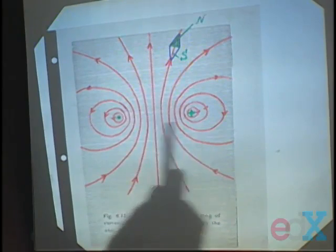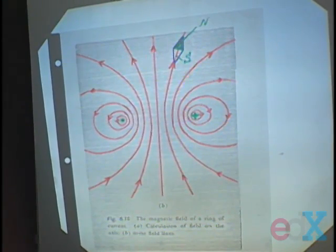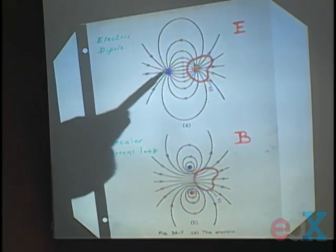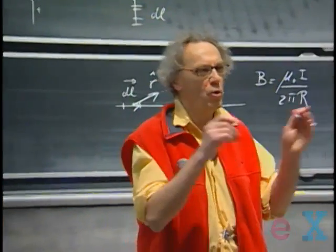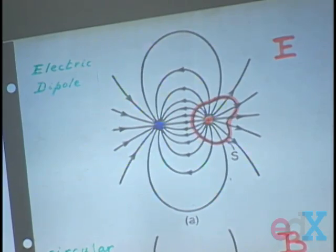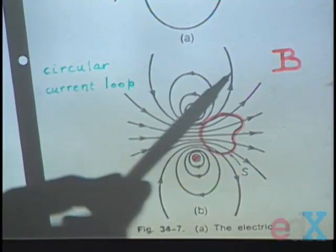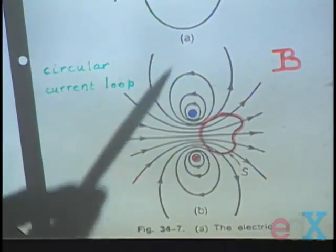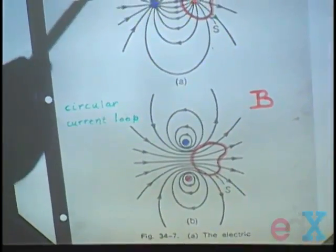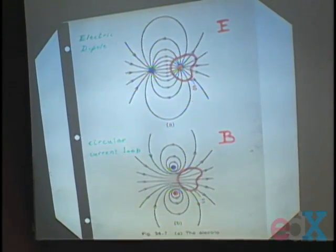When you're very far away from a current loop, the magnetic field configuration is very similar to that of an electric dipole. Look at the electric dipole: positive charge, negative charge, and far away you see electric field lines. Now look at your current loop — current going into the paper here, coming out here, it is a loop. You see the same configuration: field lines going like so. Where electric field lines are coming in, magnetic field lines are coming in. Where electric field lines are going out, magnetic field lines are going out. They look very similar.